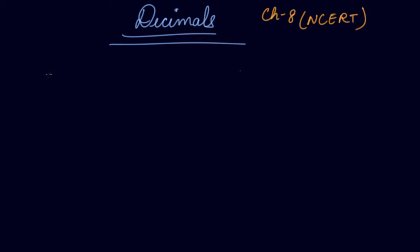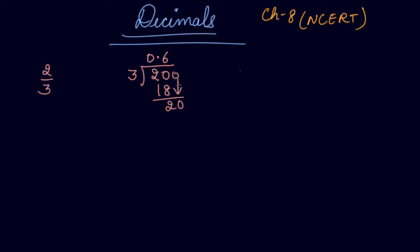What are decimals? Let's say 2 divided by 3. If you divide 2 by 3, you get 0 — put 0 here, 3 sixes are 18, then 2, 0, then 6 are 18, and so on. So you get an answer of 0.66.